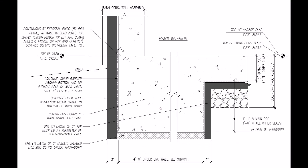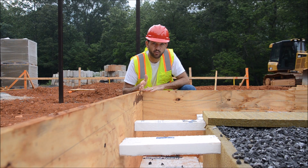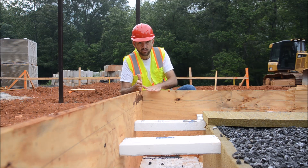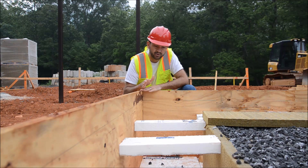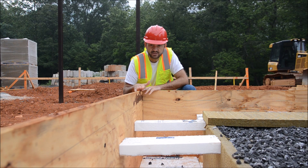This is the turn-down slab edge of the barn at the off-grid homestead. This is the formwork. The slab will be poured right up to this level and it will turn down about 12 to 18 inches below grade. Once these forms are pulled away,